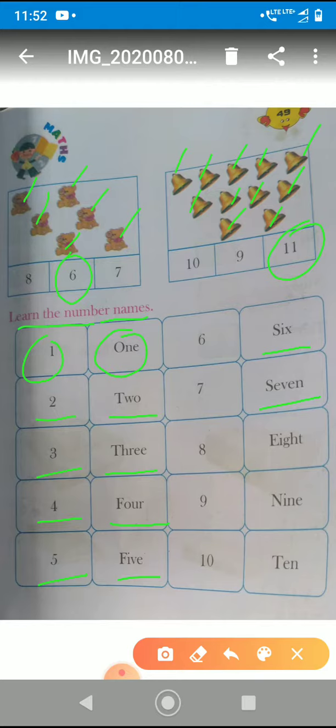So, next number is eight. E-I-G-H-T. Eight. Okay. So, after eight, nine. N-I-N-E. Nine.